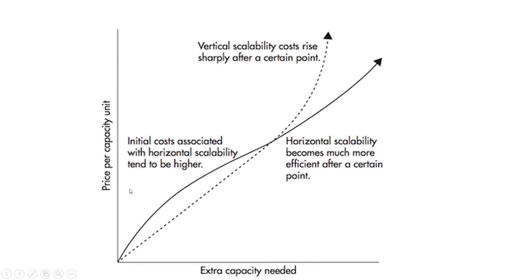Finally, to summarize everything in a single chart — we can see extra capacity versus price. Initially, horizontal scaling has a higher price due to that upfront complexity, but as you begin to scale it becomes more linear because you've paid the upfront cost of designing your system to scale horizontally. With vertical scalability, as you need more capacity, those components get much more expensive and it eventually goes exponential. Past a certain point, if you're trying to vertically scale, you'll have to transition to a horizontal scaling architecture, which means rewriting your app — and that takes a lot of time and money from an engineering perspective.